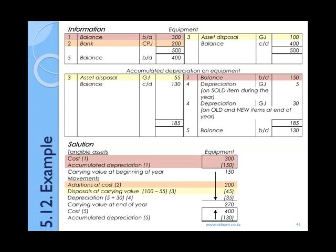Moving on, we can see that something must have been sold, as in both equipment and accumulated depreciation on equipment, figures of a hundred and fifty-five Rand respectively have been transferred out to the asset disposal account. This means that the cost of the sold item was a hundred and the total depreciation up until the date of sale was 55. Using these two figures, you can calculate the carrying value of the sold item as 45 Rand. Because we've sold it, it means that the value of our assets has decreased, and we therefore need to show it in brackets.